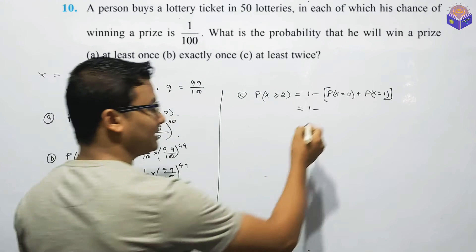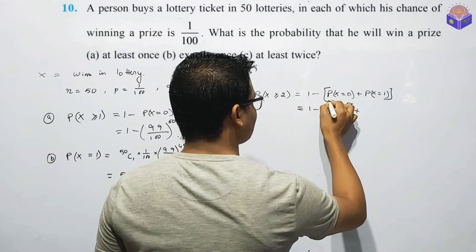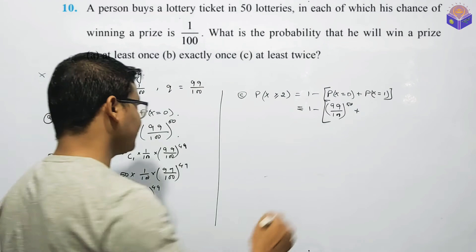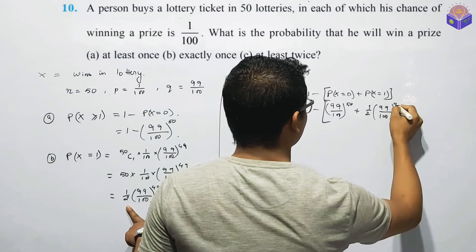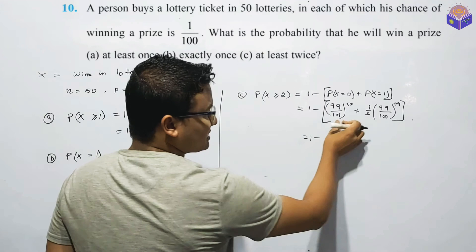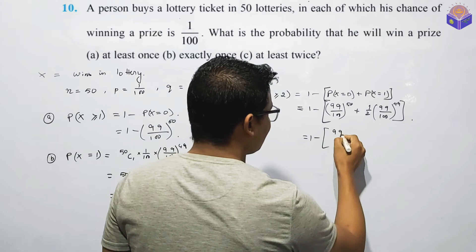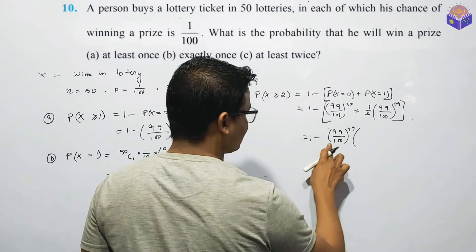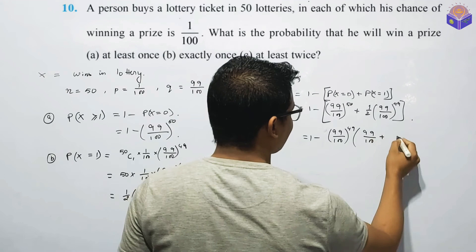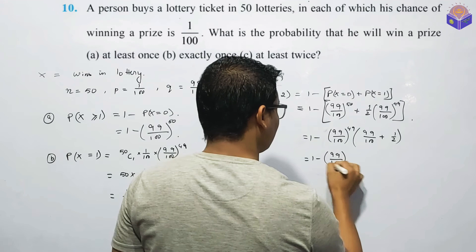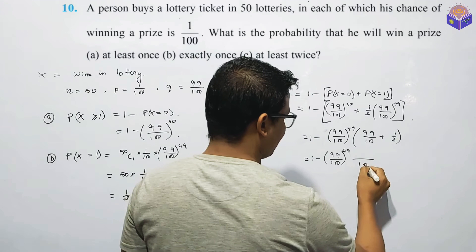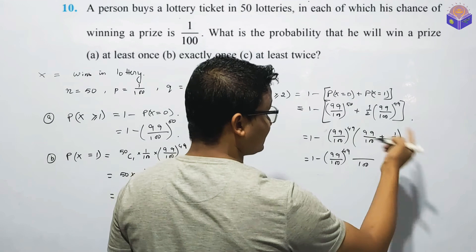99 by 100 to the power of 50, plus P of X equal to 1. Then 1 minus P of X equal to 0 is 99 by 100 to the power of 49. So: 1 minus 99 by 100 to the power of 49. 1 minus P of X equal to 0 is 99 by 50. 99 to the power of 50 is 1 for 9.